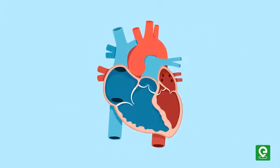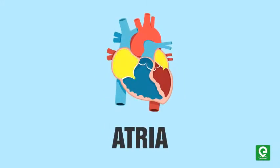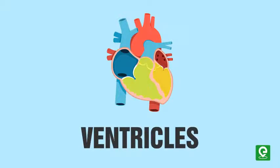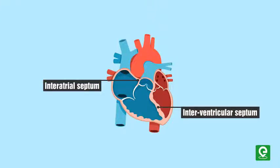Our heart has four chambers: two relatively small upper chambers called atria, and two larger lower chambers called ventricles. A thin muscular wall called the inter-atrial septum separates the right and left atria.